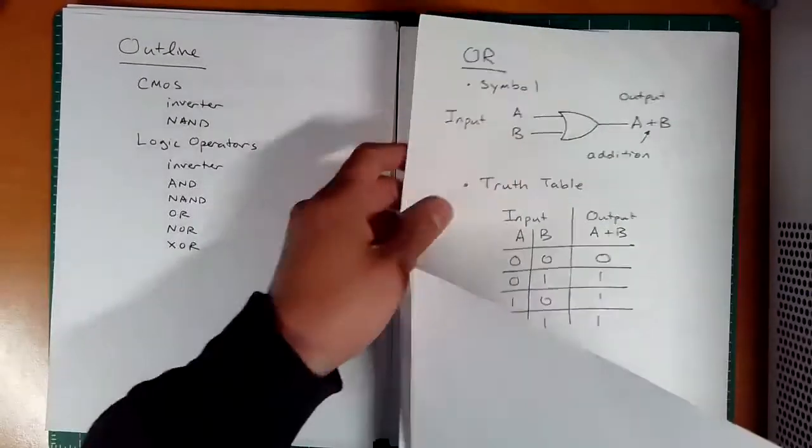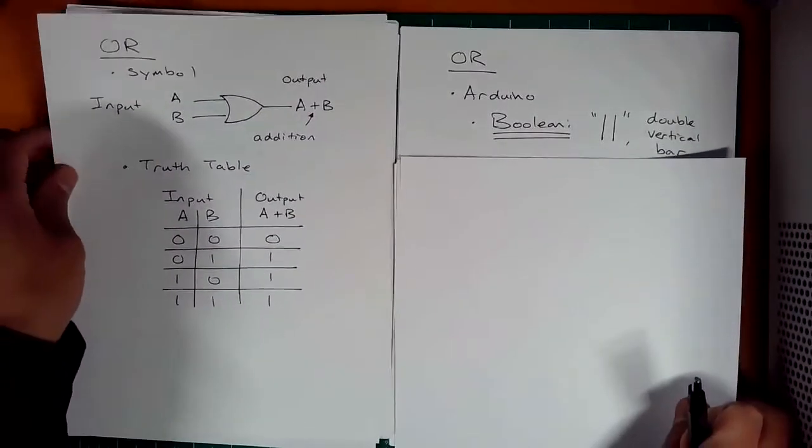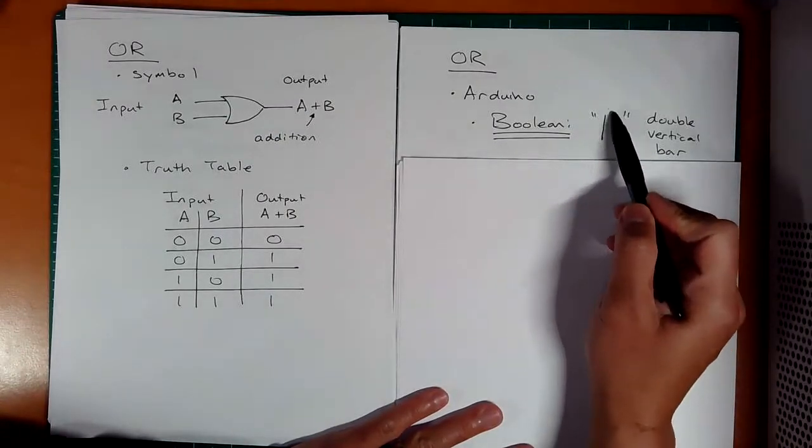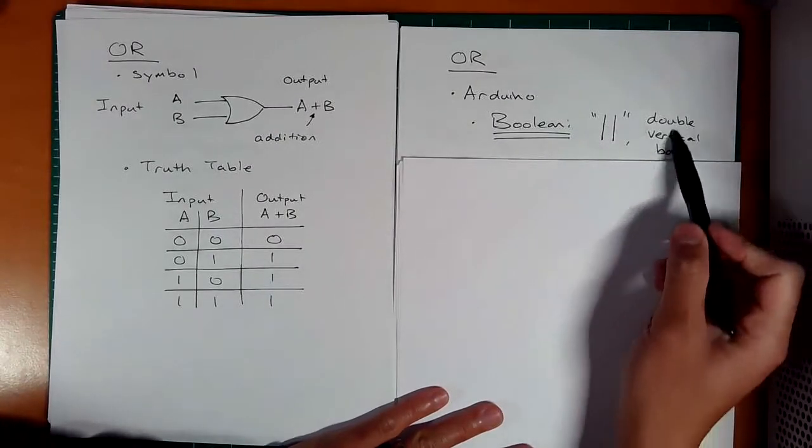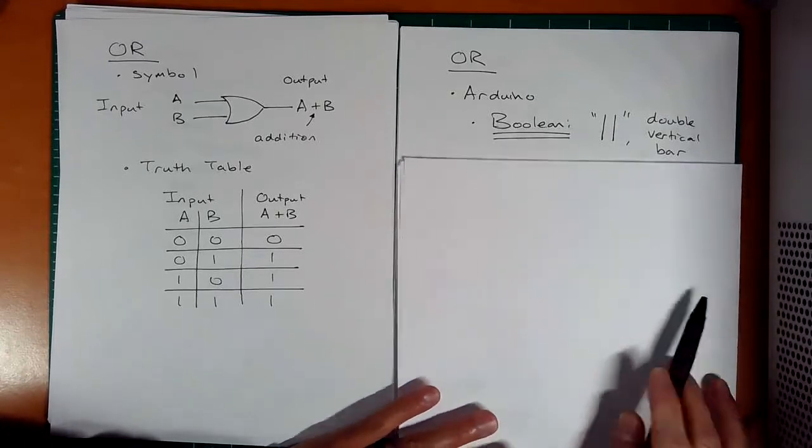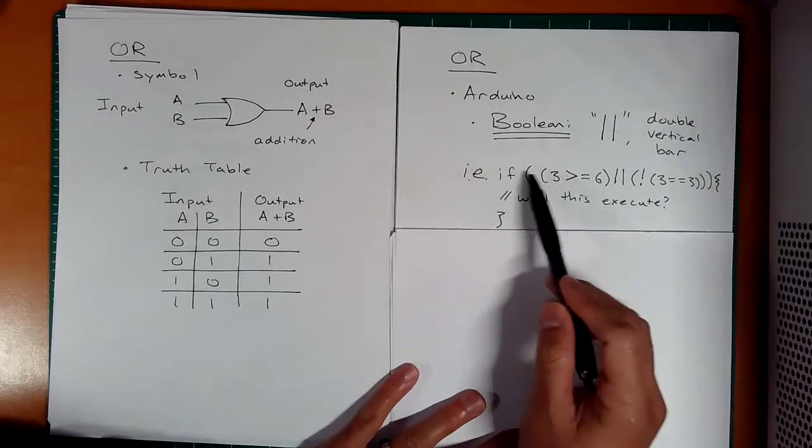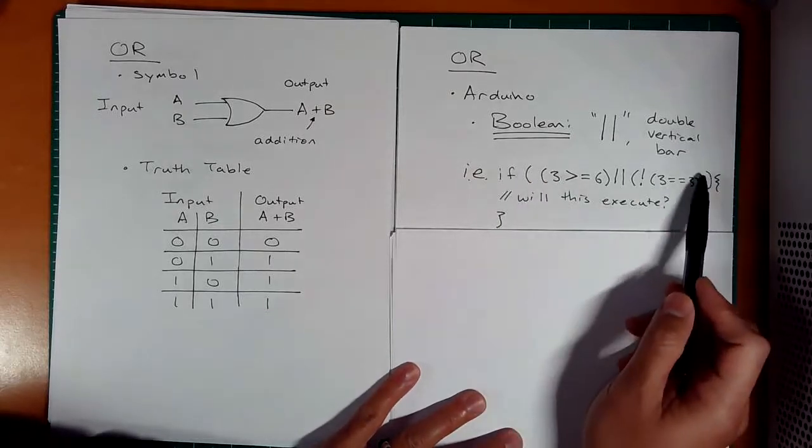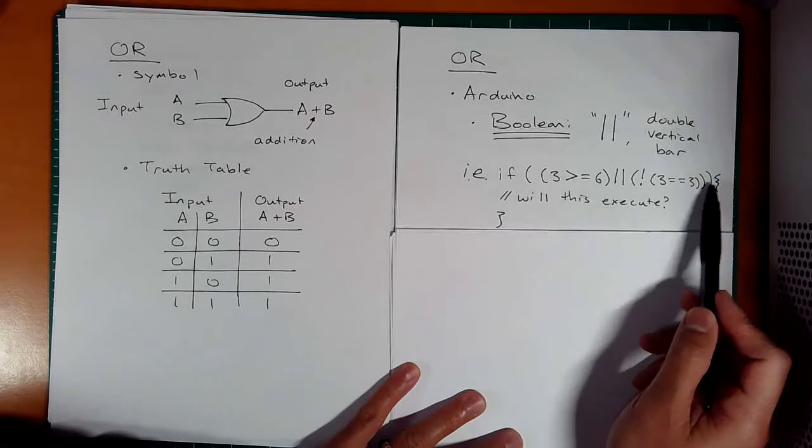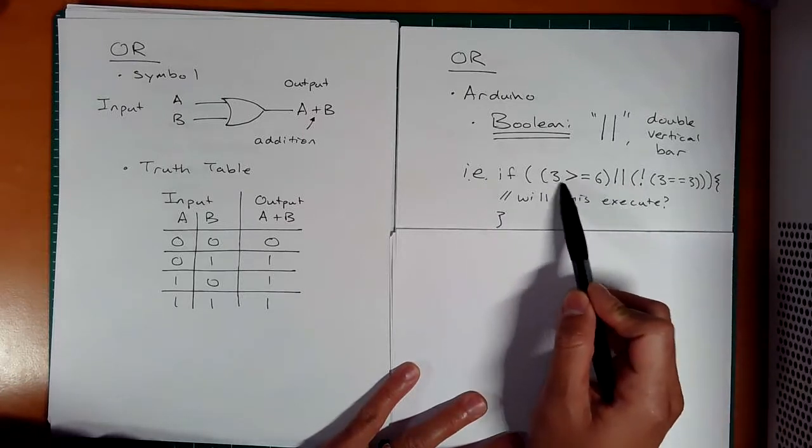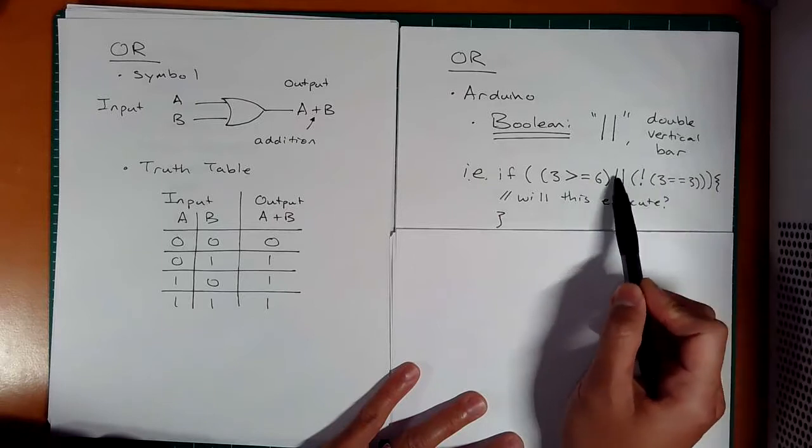How would we implement this in an Arduino-like environment? Well, you've seen it before—it's the two vertical bars here, the double vertical bars. This is for a Boolean situation. Let's do an example. Does this execute the curly brackets?